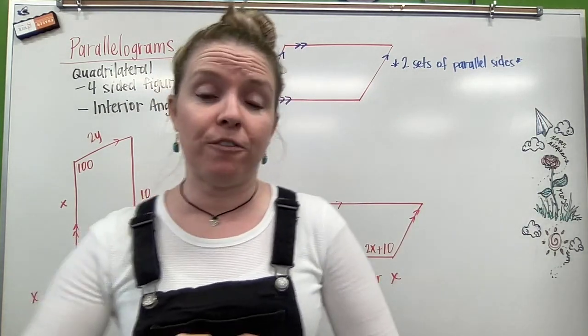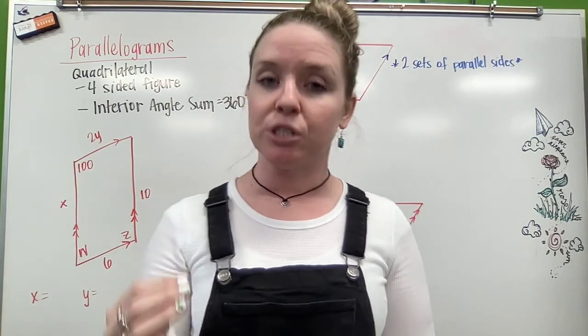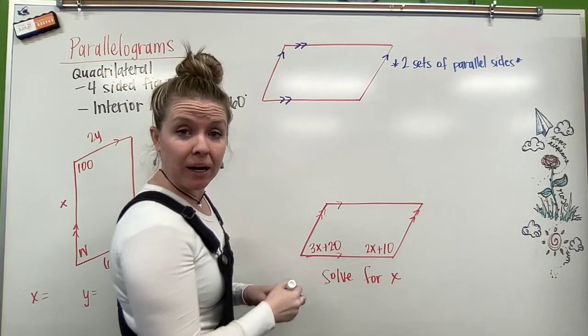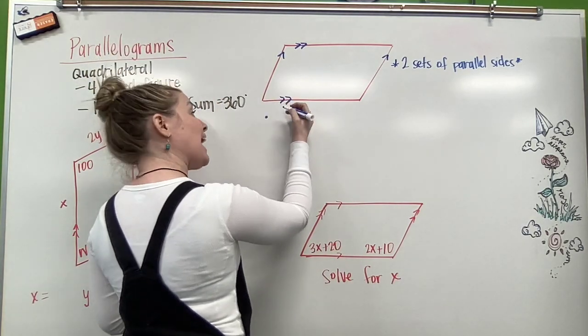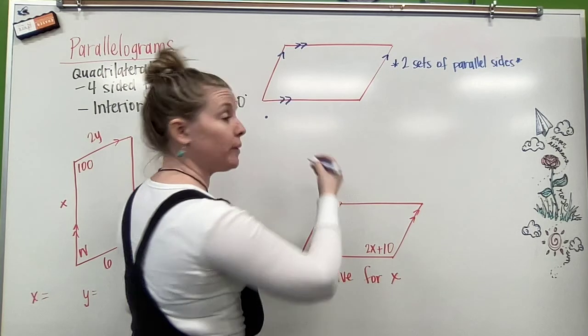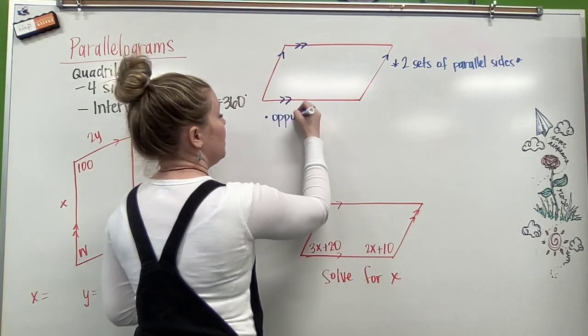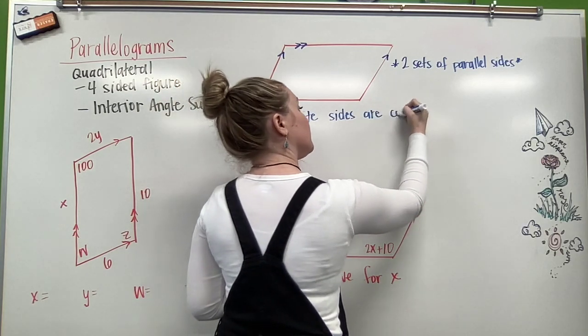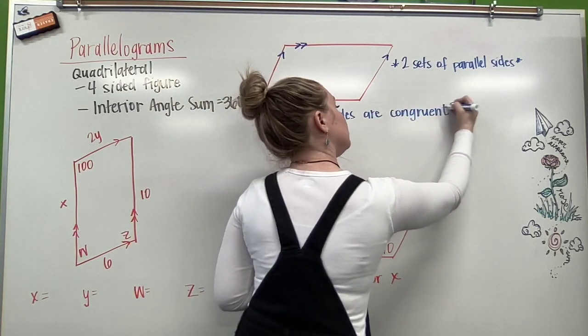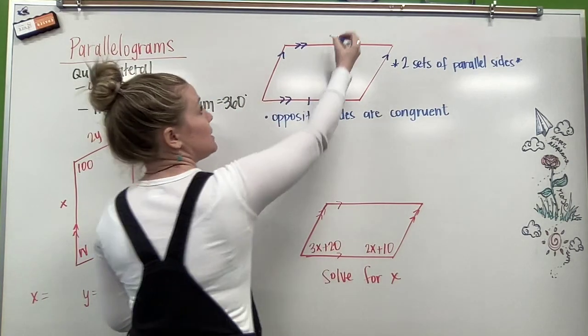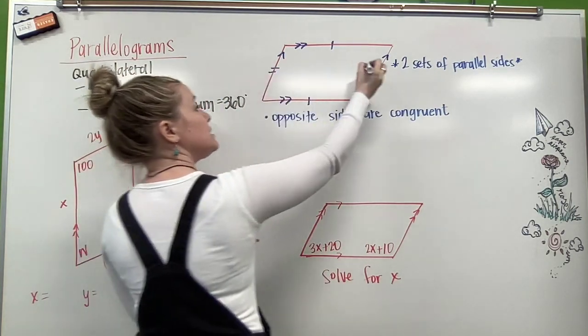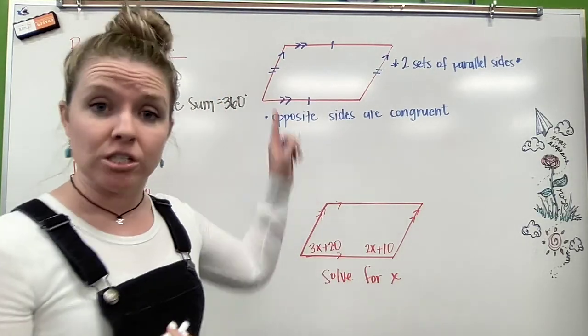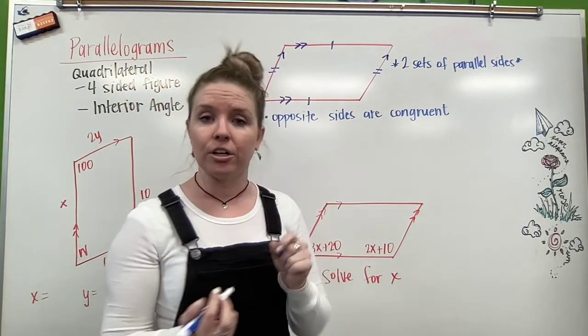Once we know our figure is a parallelogram, it comes with certain properties. The first property, given that we have a parallelogram, our opposite sides are going to be congruent. Opposite sides are congruent. So that means this side is congruent to this side, and this side is congruent to that side. They will have the exact same measures. Opposite sides are congruent.